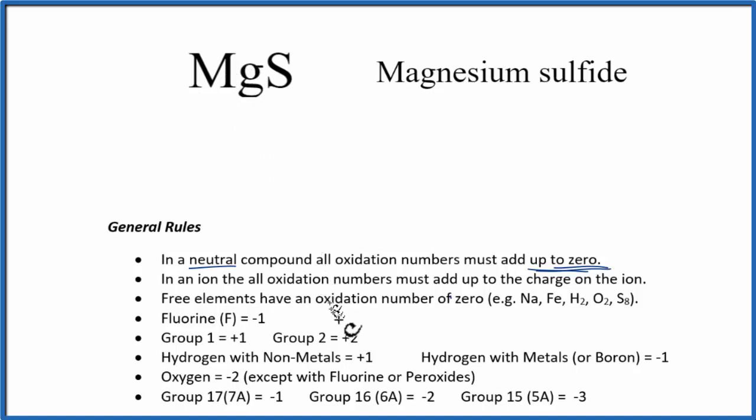Magnesium is in group two on the periodic table, and elements in group two have a plus two oxidation number.